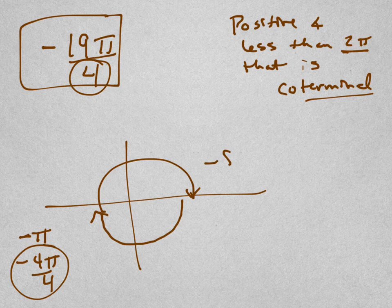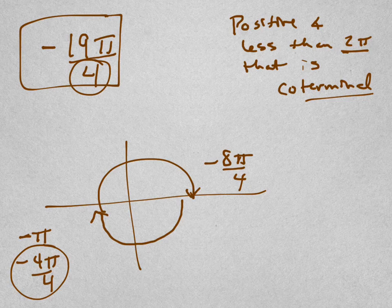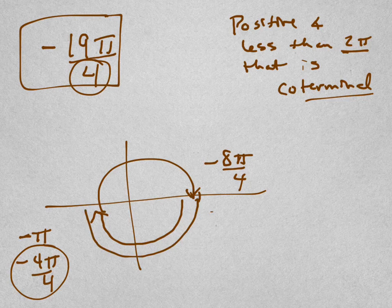What's this the same as? Negative 8π over 4, because I want another 4π. And so keep doing that, keep adding by 4. So this is going to be 12, this is going to be 16, and I need 3 more.